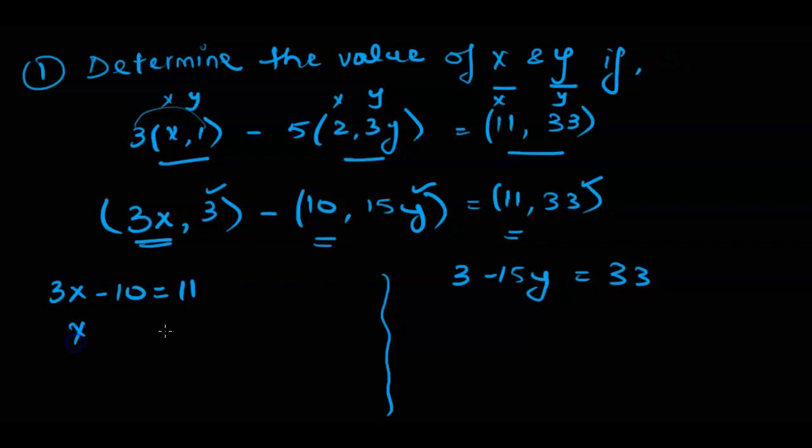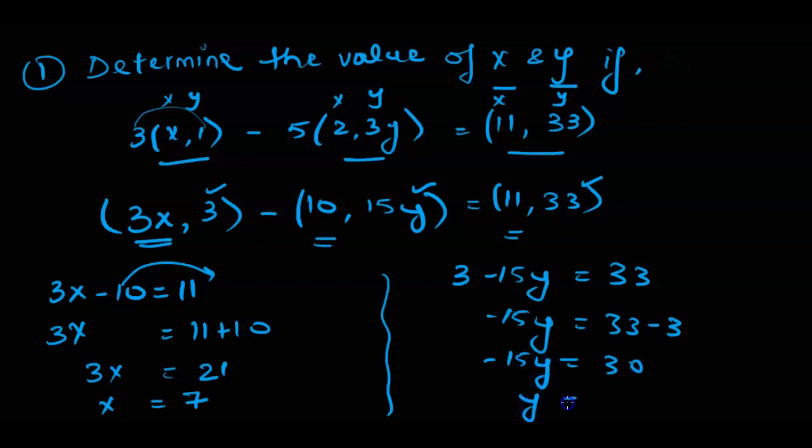Now we can solve for x here. So that would be equal to, we can move this first on the other side, 11 plus 10 which is 21, x value is equal to 7. Similarly here we can isolate y. So we would get 33 minus 3 which is 30, minus 15y, y is equal to 30 divided by minus 15 which gives us negative 2. So from here we got the x value to be 7 and we got the y value to be negative 2 and we have solved the problem.